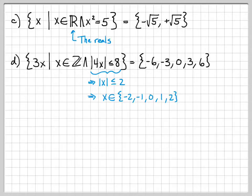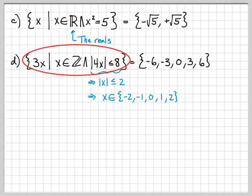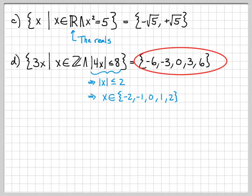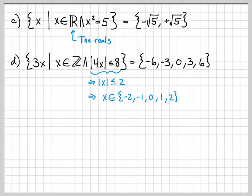This is a set with a finite number of elements, and we have listed all of them out. Those are a few examples of how you can take a compact description of a set written as an element hood test and explicitly write out the elements. In the next example, we're going to do it the other way — start with a pattern and figure out how to write that set as an element hood test.